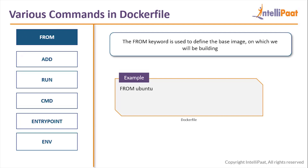The first line of a Dockerfile is always FROM. The FROM command specifies the base image on which you want to make changes. For example, we made changes on the Ubuntu image where we installed Apache. In the Dockerfile, you specify that base image on the first line using FROM - so 'FROM ubuntu' means the base image I want to work on is Ubuntu.